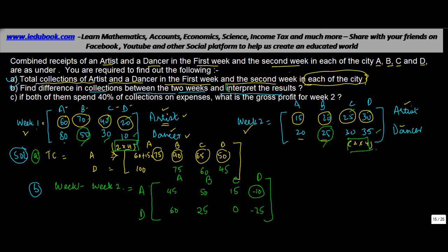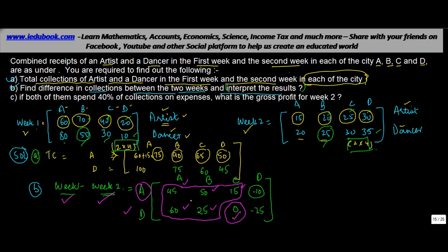For the dancer: 80 minus 20 is 60, 50 minus 25 is 25, 30 minus 30 gives 0, and 10 minus 35 gives minus 25. Interpreting these results: wherever the values are positive, collections in week one were more than in week two — this applies to city A and city B for both artist and dancer, and city C for the artist only. For city D the values are negative, meaning collections actually increased in week two.